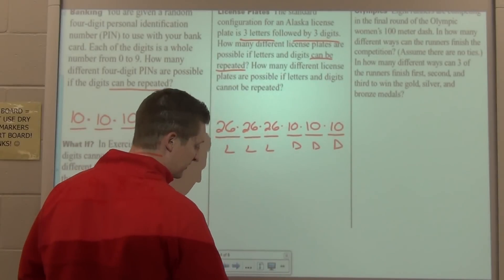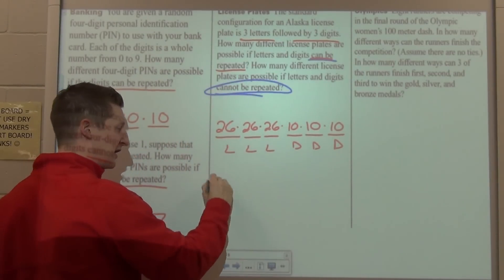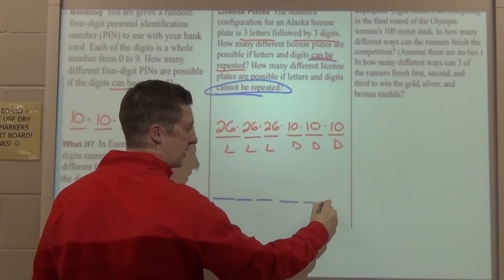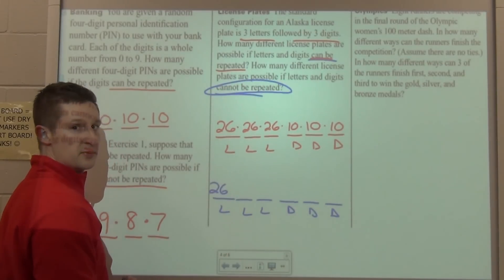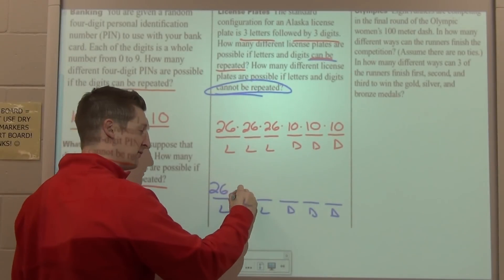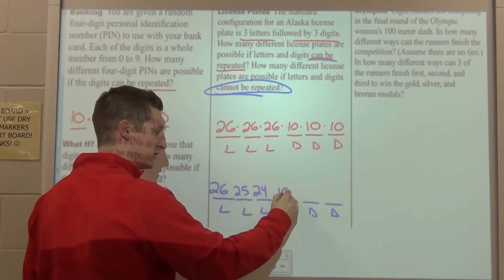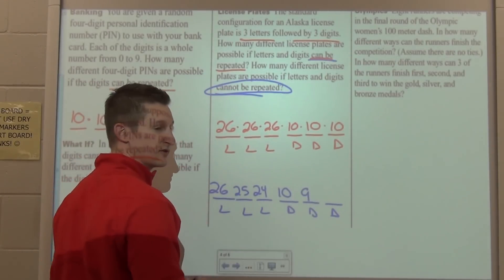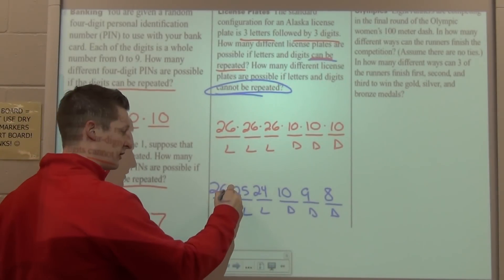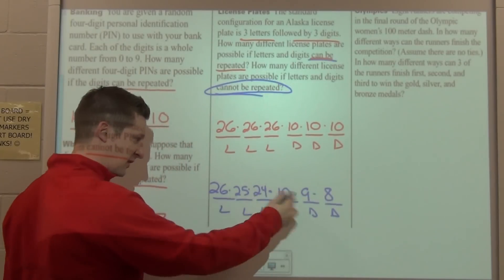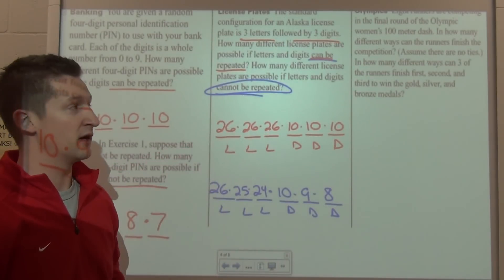Now, the second option we've got where our letters and digits cannot be repeated. So, the license plate is going to look the same. Three letters, followed by three digits. So, we've got three letters, followed by three digits. Now, I still have 26 options for the first letter, but because I can't repeat letters, after I choose whatever letter that might be, I now have only 25 options left for the second letter. And 24 for the third. When I get to the digits, I've got 10 available at first, but then I have to drop down to nine options for the second, and eight options for the third. Again, because I'm using one of those digits, and I take it away as being an option for the next one. Fundamental counting principle says multiply all of these things together. You multiply those six numbers together, you get another rather large number, but it shouldn't be as large as the one you had when you were able to repeat letters and digits.